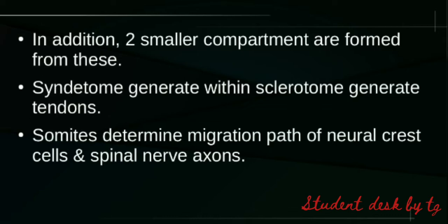The somites also determine the migration path of neural crest cells and nerve axons. The somites dictate which neural crest cells and nerve axons can migrate and along which path they travel.